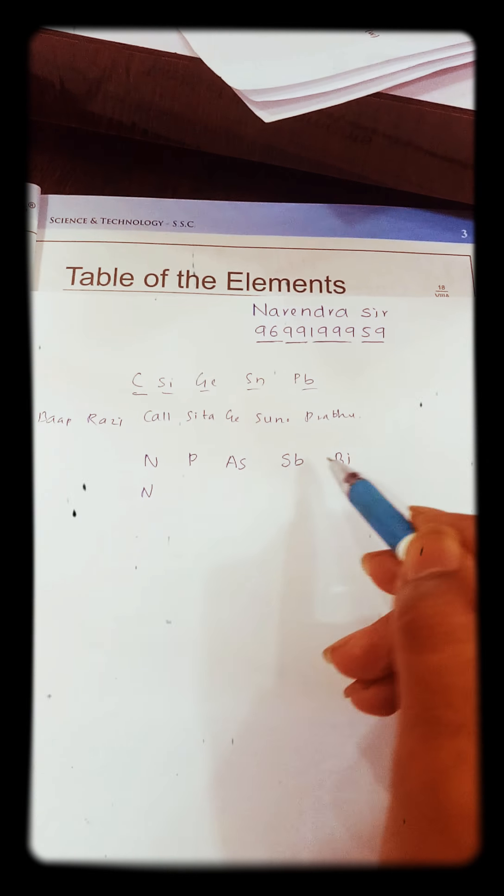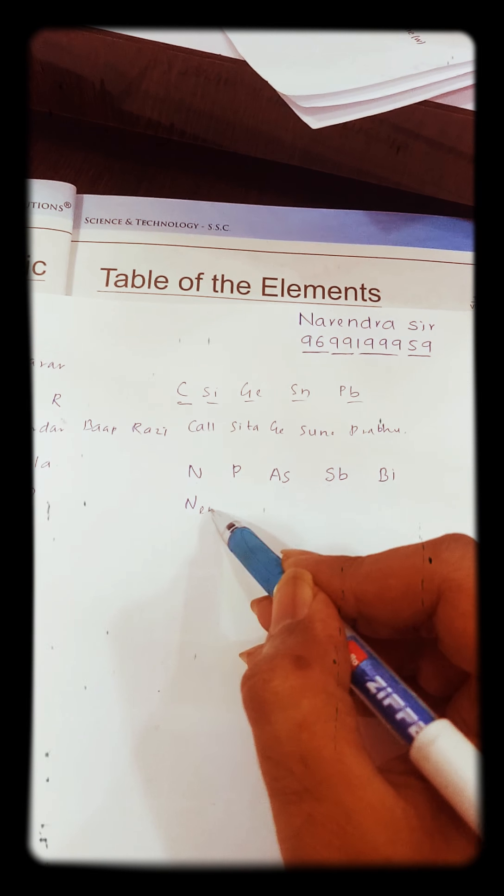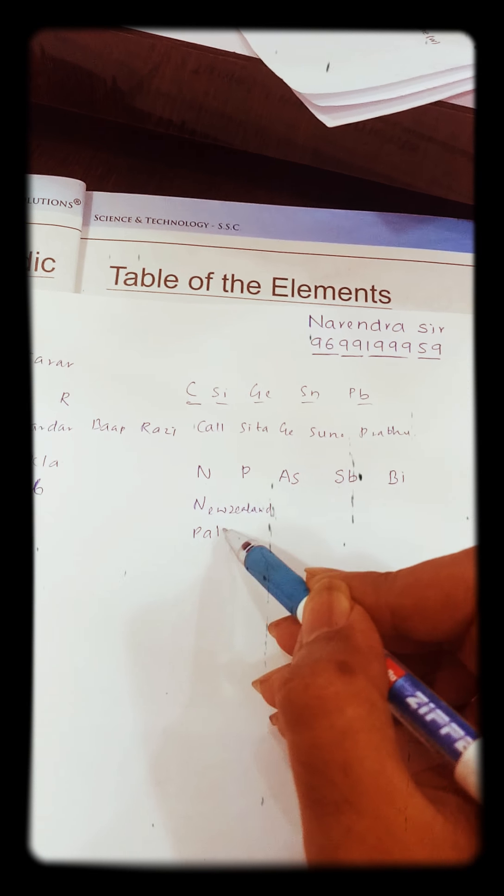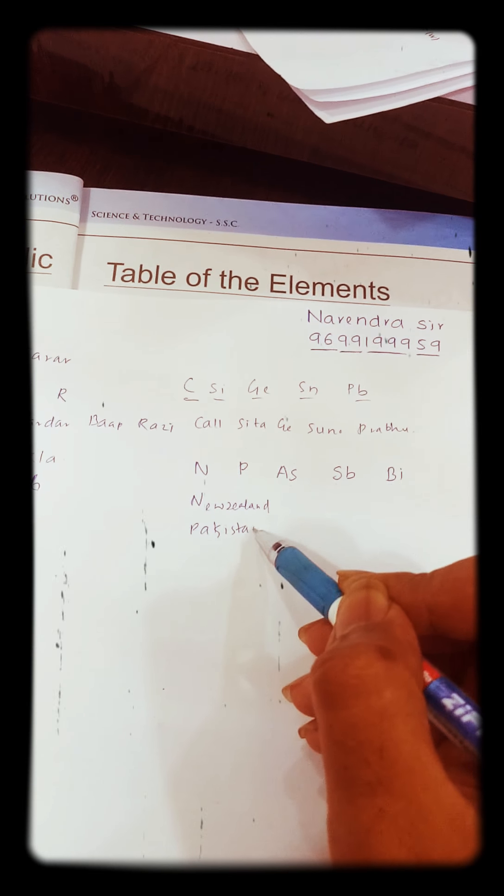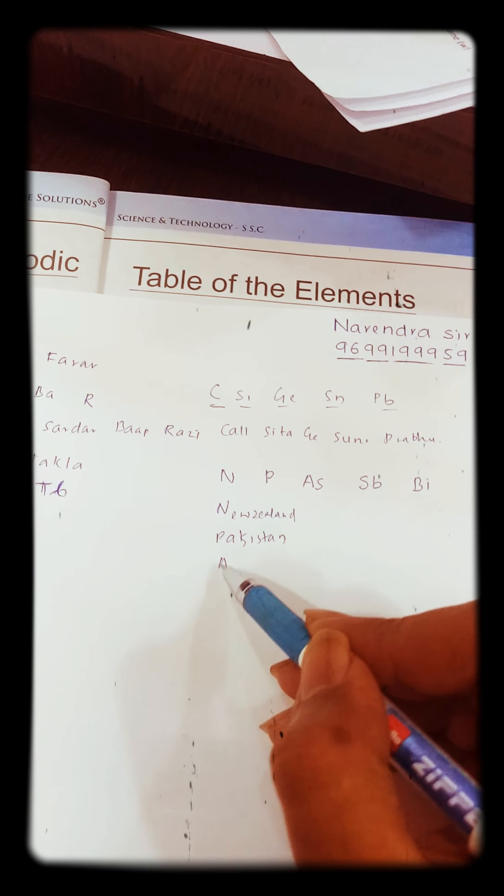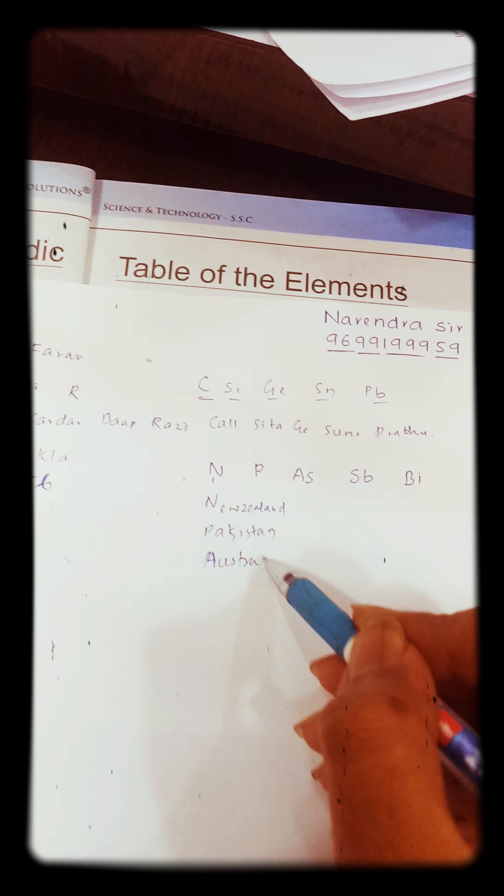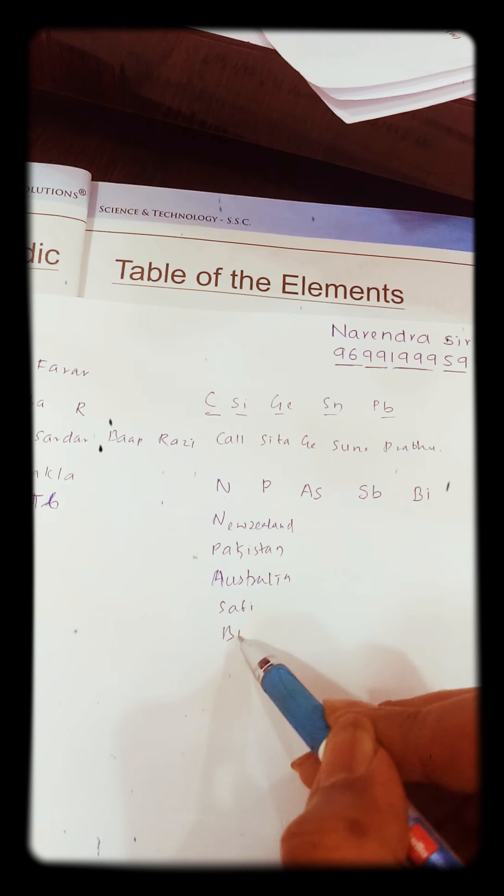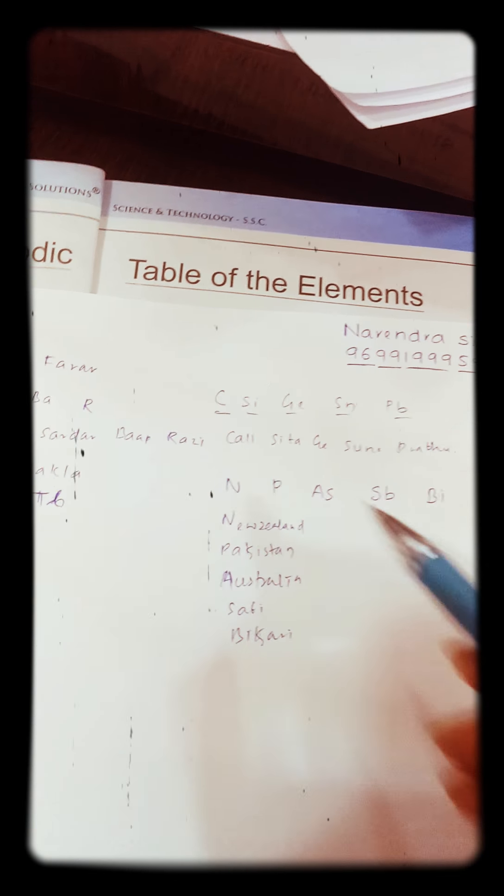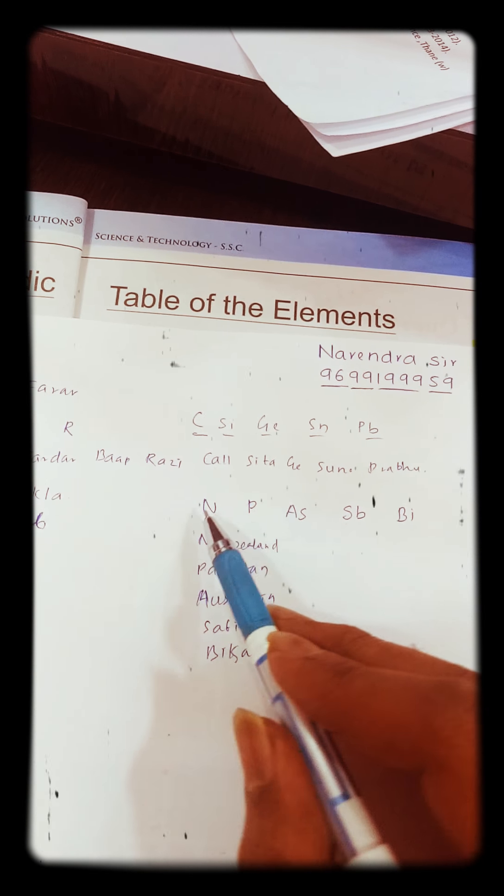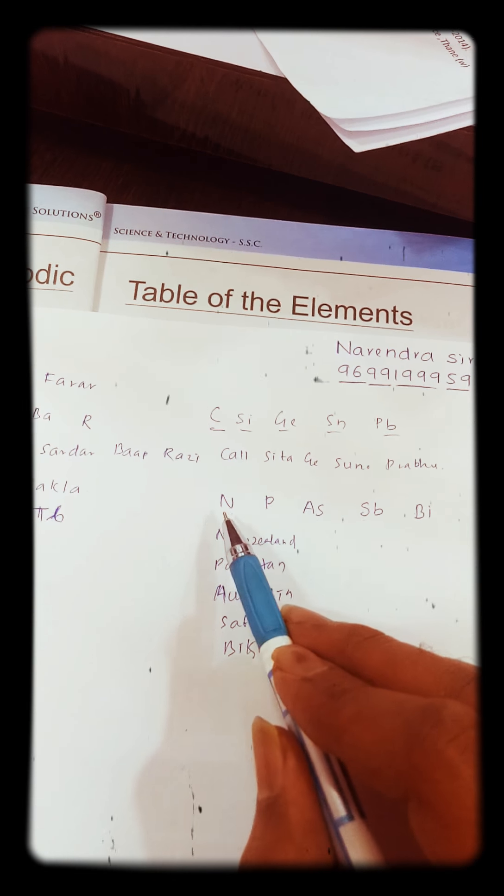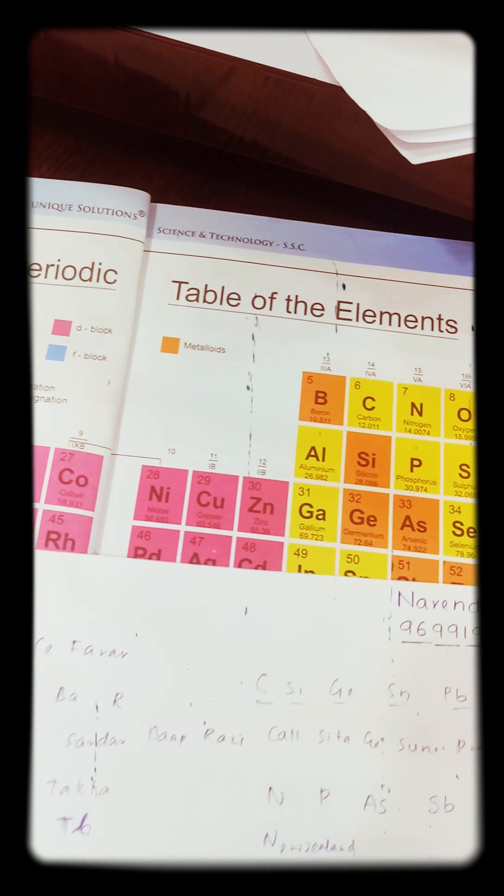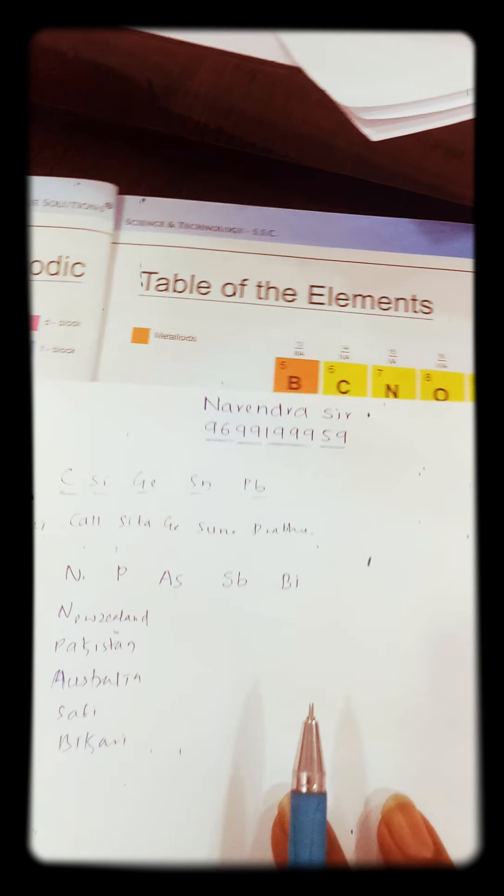Nitrogen, Phosphorus, Arsenic, Antimony, Bismuth. So you can write just New Zealand, Pakistan, Australia, Sabhi, Bikari. It's from 5th A group: New Zealand, Pakistan, Australia, Sabhi, Bikari - Nitrogen, Phosphorus, Arsenic, Antimony, Bismuth.